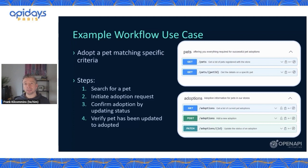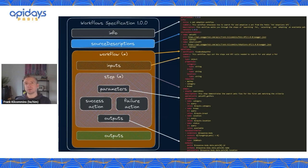An example workflows use case here would be describing to these third-party shelters and charities how they can go about adopting a pet matching specific criteria. The steps we've decided should be part of that workflow are: step one, search for a pet; step two, initiate an adoption request once we've found a matching pet; step three, confirm the adoption by updating the status of a registered adoption; and finally, verify that the pet status has been updated in the catalog to state that it's adopted and no longer showing up in available searches.